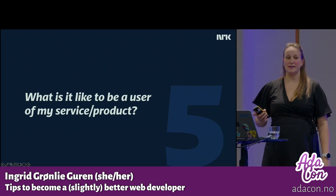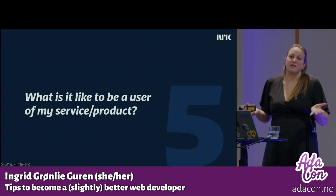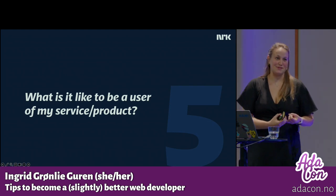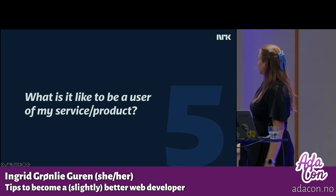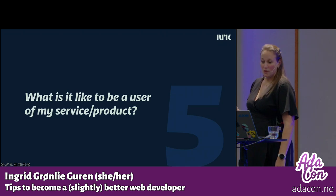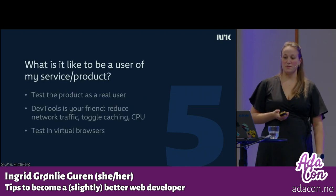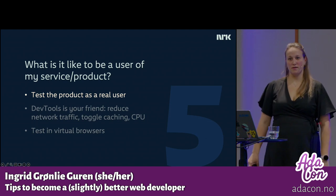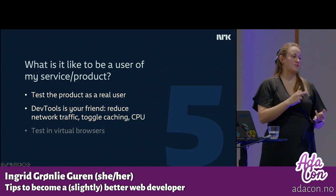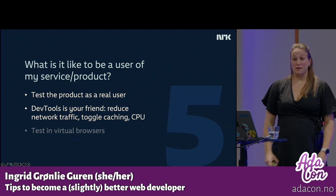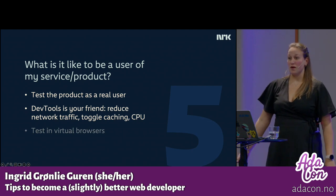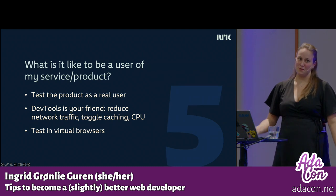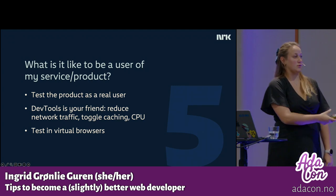We talked about how users are on the internet. That leads to the last question: how easy is it to be a user of mine? Everyone doesn't have the same phone as you, the same browser version, or even the same data allowance for the month. To figure out what it's like to be a user of yours, you should test the product as a green user — or you could rewrite that and say: test the product as a shitty user. DevTools is your friend — reduce network traffic, toggle caching, throttle CPU. You can toggle things to simulate sitting on a bad computer. And if you have tests in virtual browsers — some free, some expensive — do both automated and manual testing.